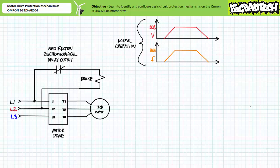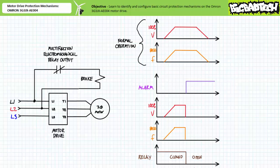As one such application, consider a drive that ordinarily accelerates and decelerates a motor and applied load during regular operation without the need of a friction brake. However, in the case of an emergency, it needs to engage a friction brake. In this application, the solenoid of a spring-operated electrically-released friction brake is continually energized via the normally closed side of the multifunction electromechanical relay output executing the alarm function, thus keeping the friction brake continually disengaged during normal operation.